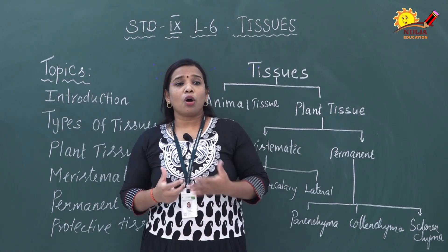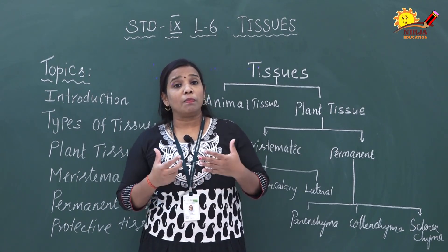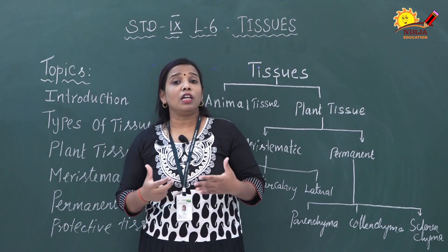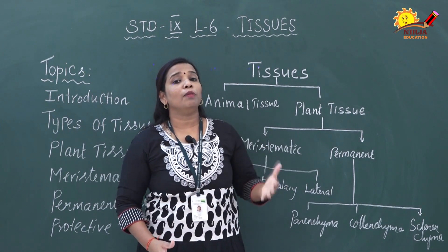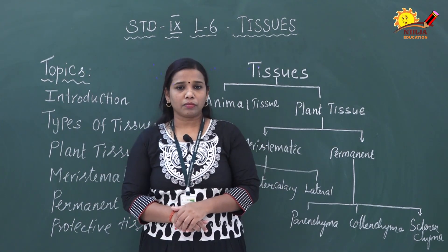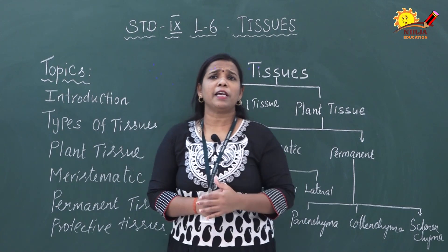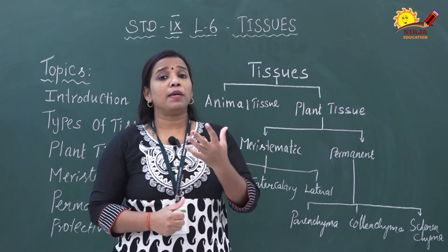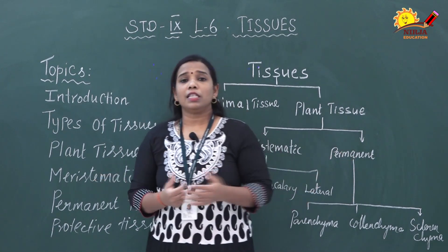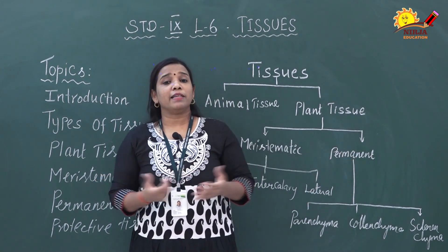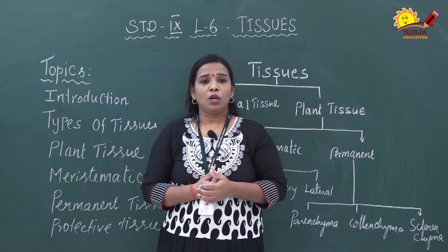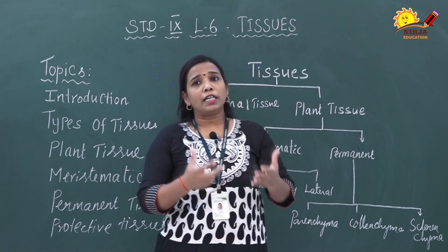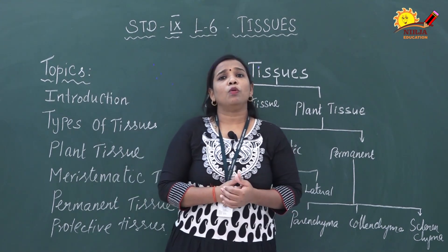Cells and tissues make up our bodies, and plants also have cells and tissues. Each and every living organism is made up of building blocks — that is, cells. In the previous chapter, we discussed the fundamental unit of life. The cell is a basic unit; without cells, organisms cannot be made. So cells form the basic unit of life, and now let us know more about tissues.